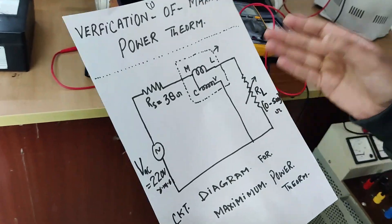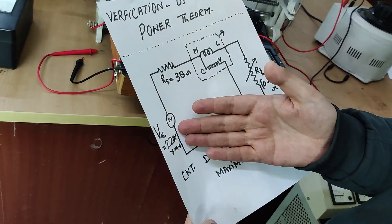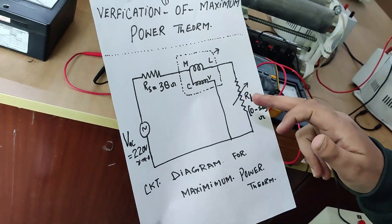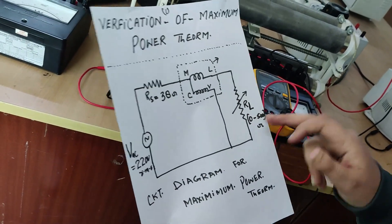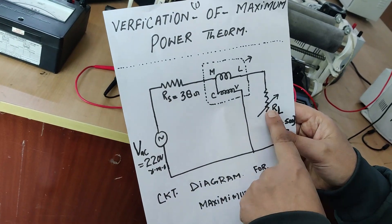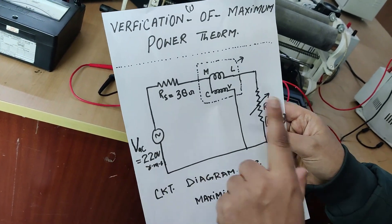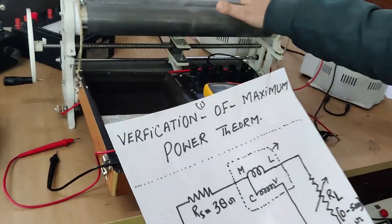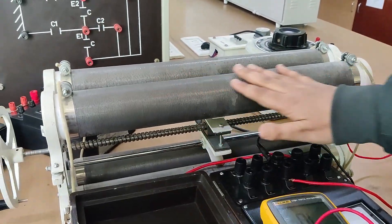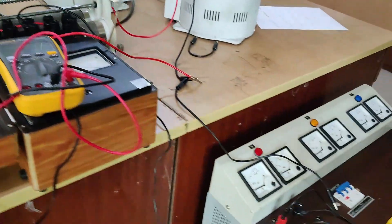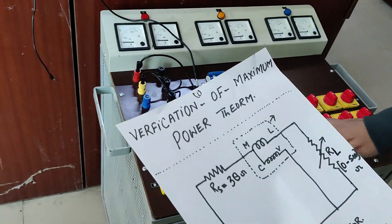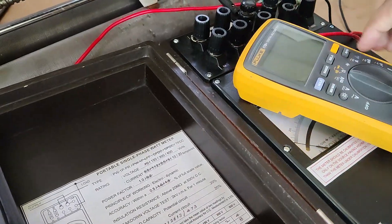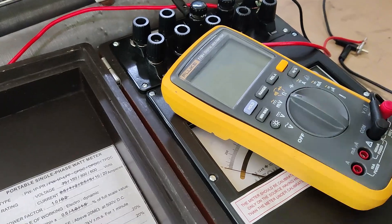As you can see, I have the AC source here, then I have the source resistance, then I have used the watt meter to measure power, then I have used the load resistance. When the source resistance is equal to the load resistance, we can say the maximum power is transferred to the load. My source resistance is this rheostat — I will keep this as the source resistance. Then I have the load resistance, which is a load in which various rheostats are connected.